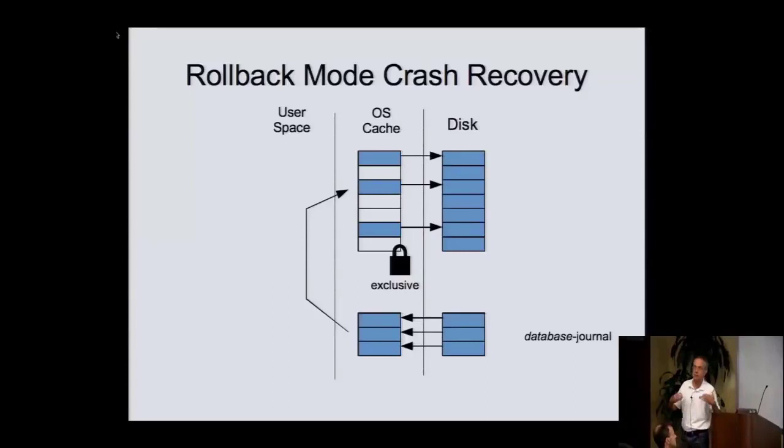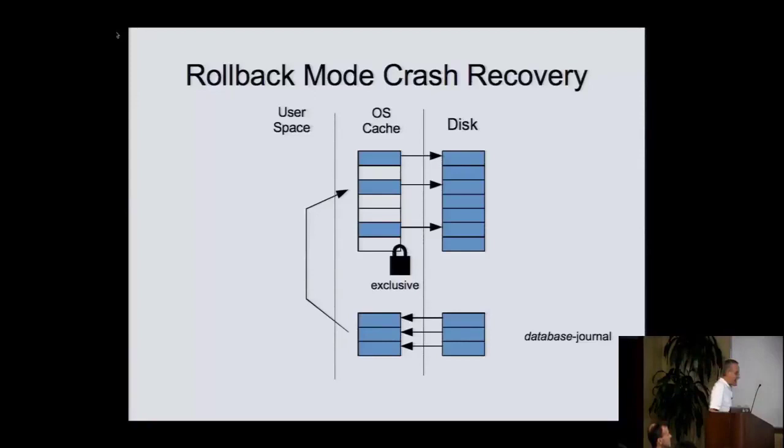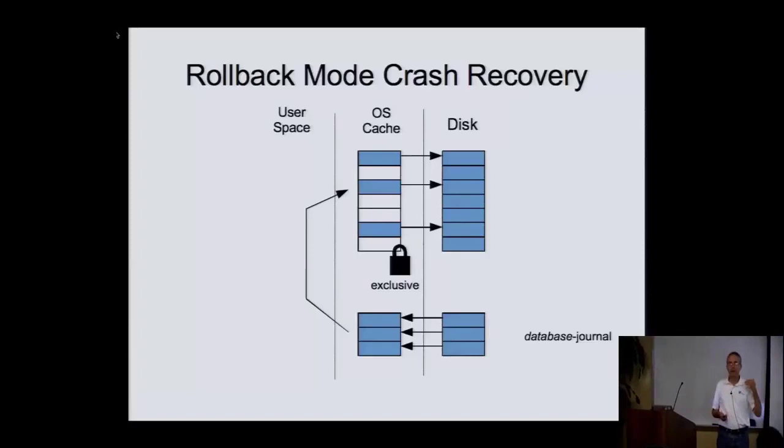That's rollback mode — the default, the most reliable, but kind of slow. You can have multiple readers or one writer, but you can't have a reader and a writer going at the same time.